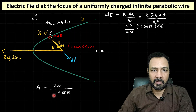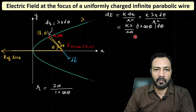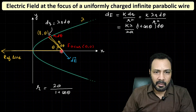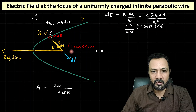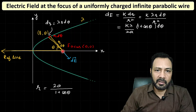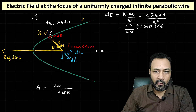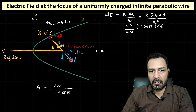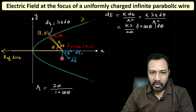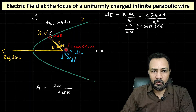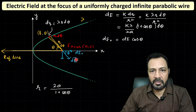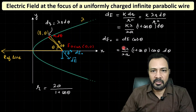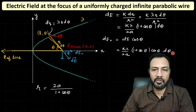Substituting r = 2a/(1 + cosθ) into dE = kλ dθ/r gives dE = kλ(1 + cosθ) dθ/(2a). Since y-components cancel by symmetry, only the x-component contributes: dEx = dE·cosθ = [kλ/(2a)]·(1 + cosθ)·cosθ dθ.